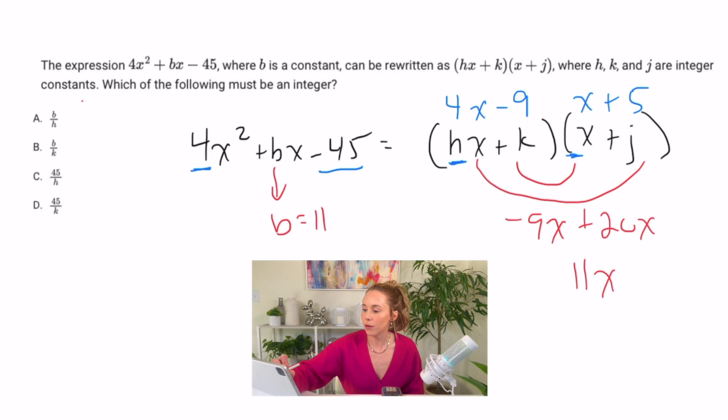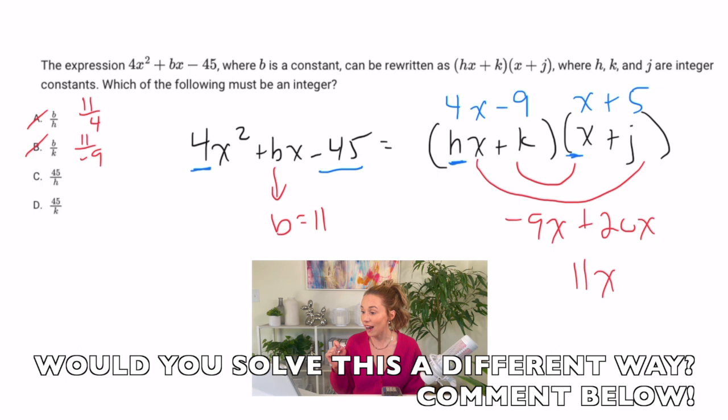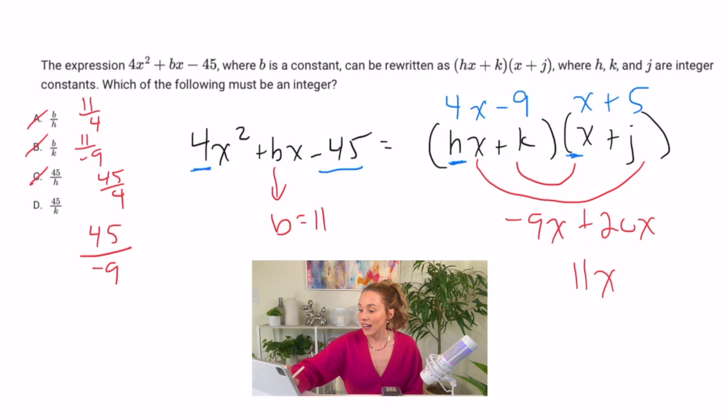And I'm going to see which one's going to get me an integer. So if I do b over h, that would be 11 over 4. That's not an integer. If I do b over k, that's going to be 11 over negative 9, also not an integer. If I do 45 over h, well I know 45 isn't divisible by 4, it's not even, so that's out. If I do 45 divided by k, that'd be 45 divided by negative 9. Yes, I get an integer because I get negative 5. So I know D is the right answer.